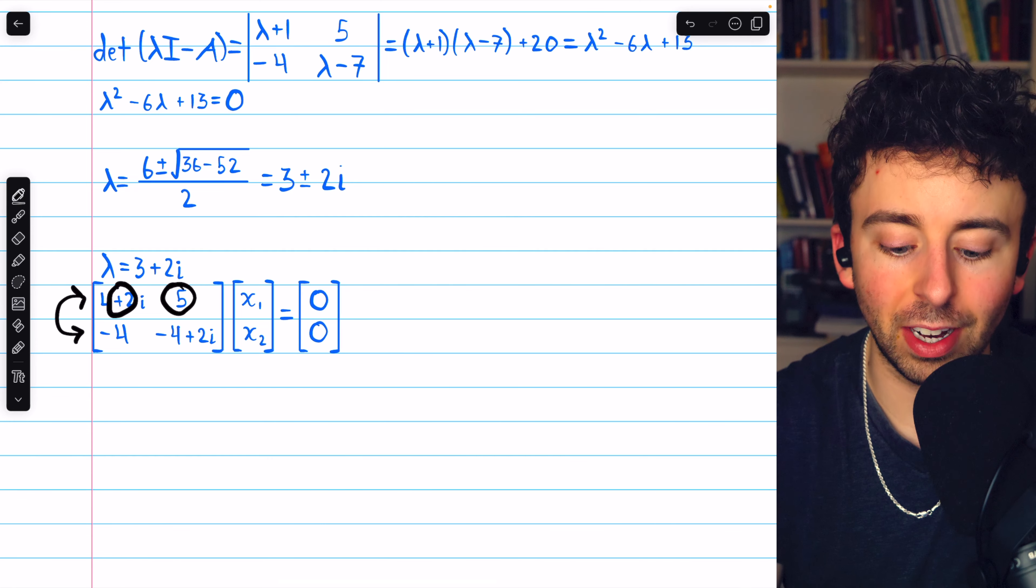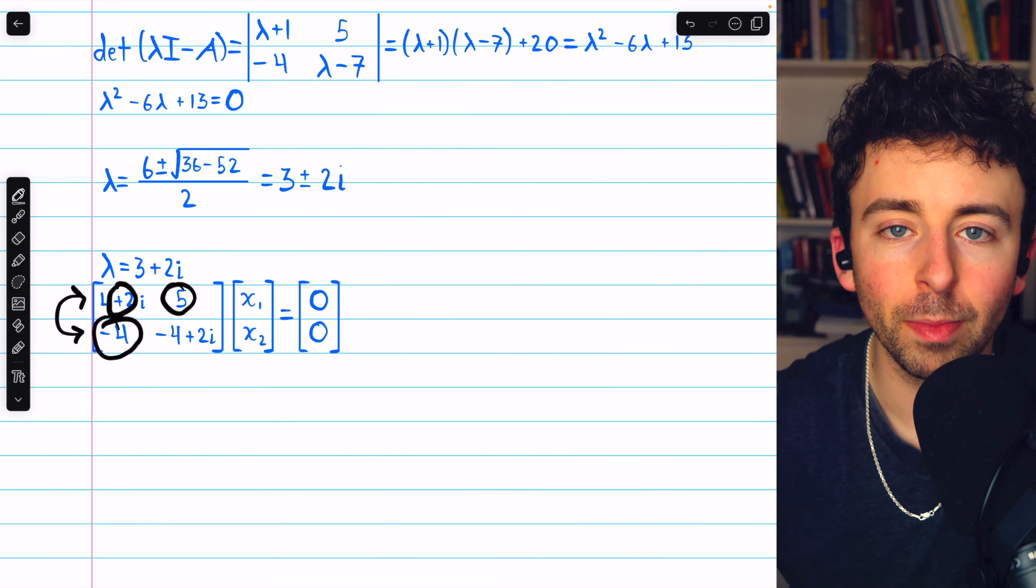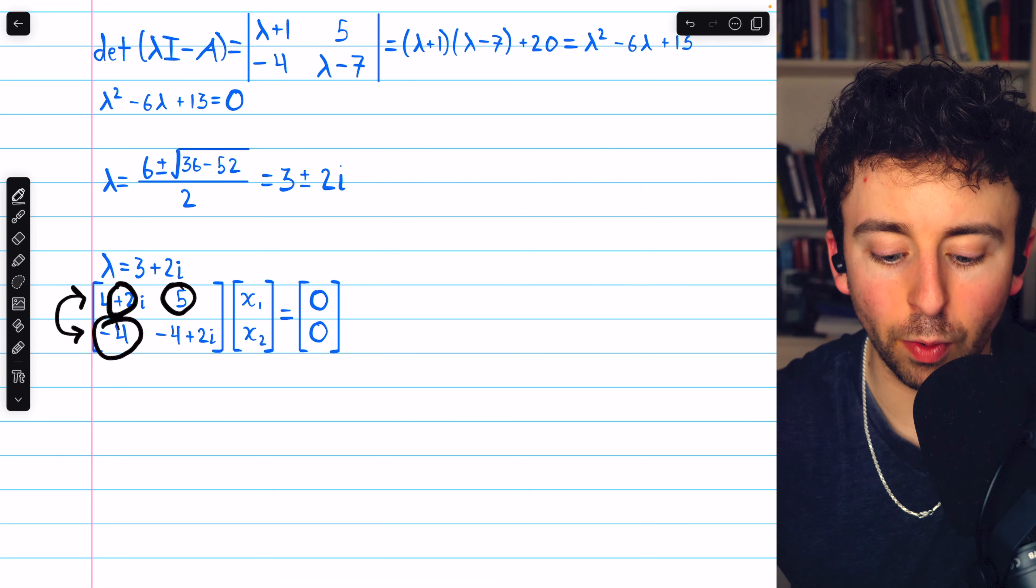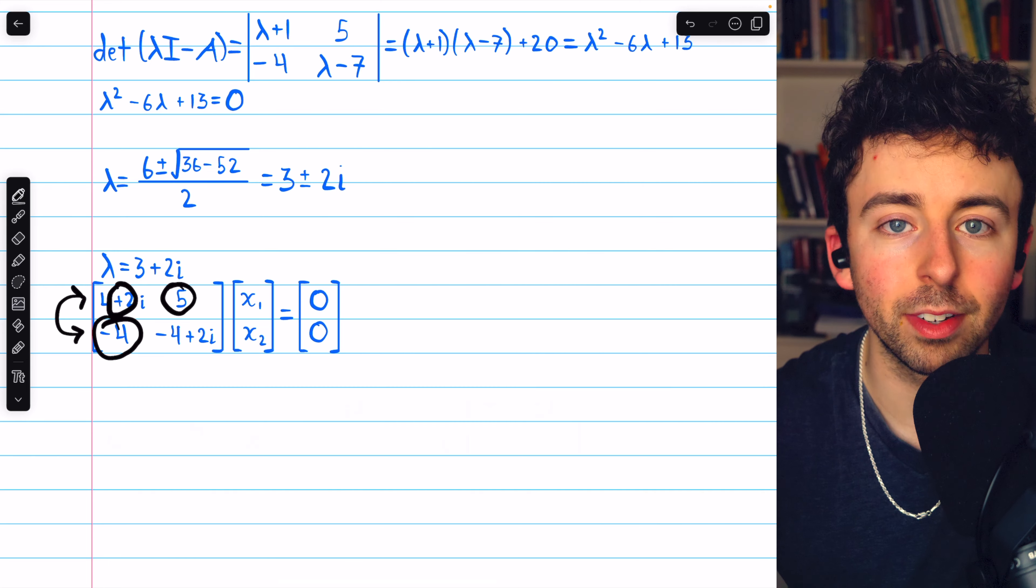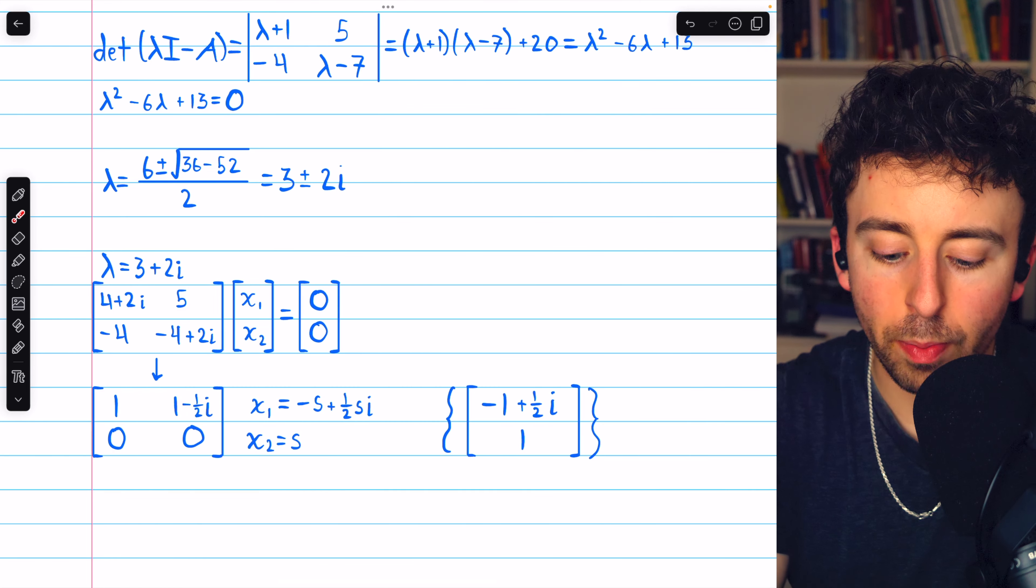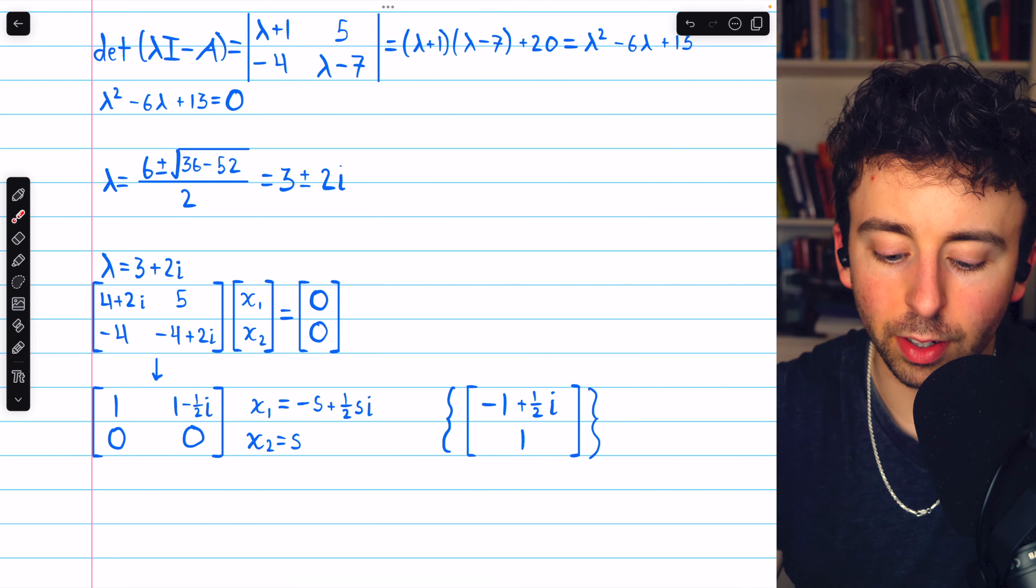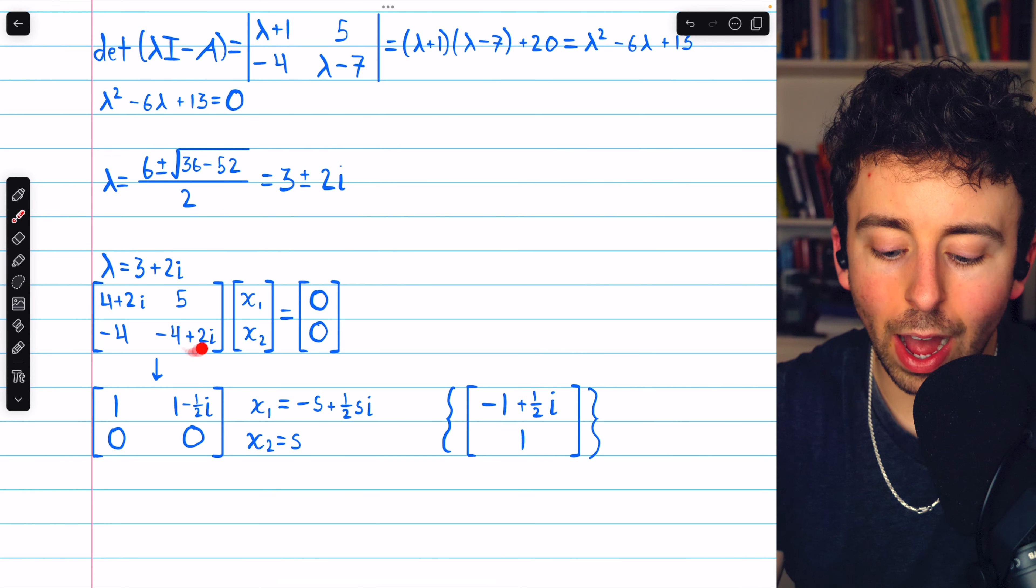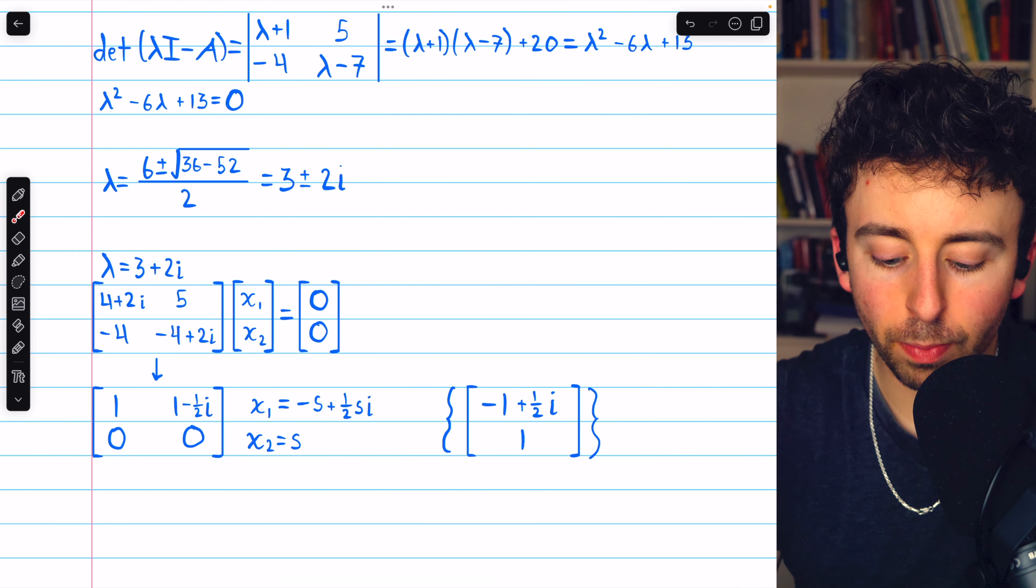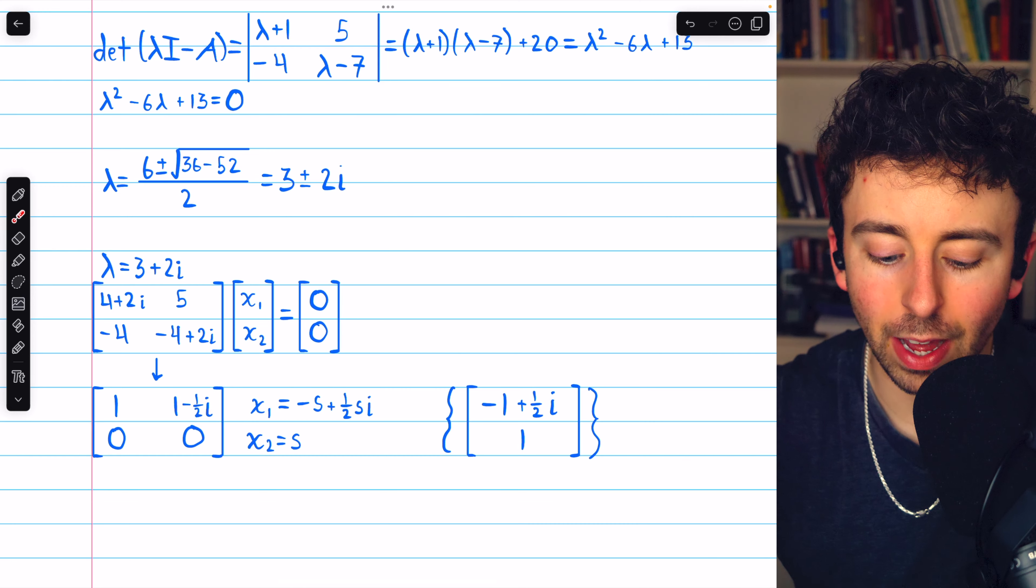That way, the first entry we have is a nice real number. And then divide row 1 by negative 4, so that first entry becomes positive 1. And that gets us here. So, we made row 1 all zeros, swapped the rows, and then divided by negative 4. Negative 4 divided by negative 4 is positive 1. And negative 4 plus 2i divided by negative 4 is positive 1 minus a half i.